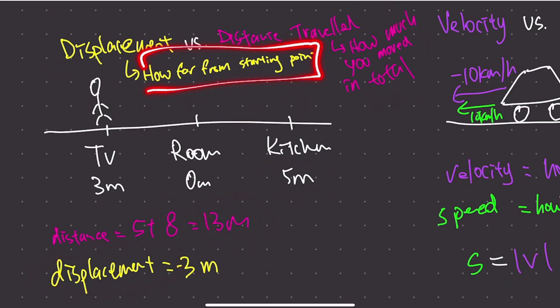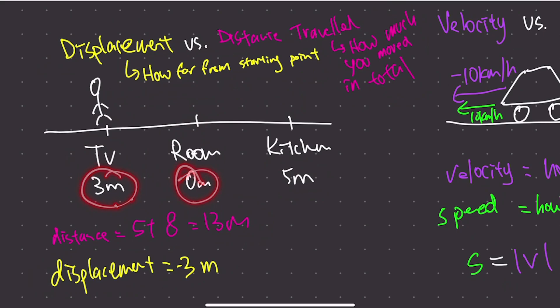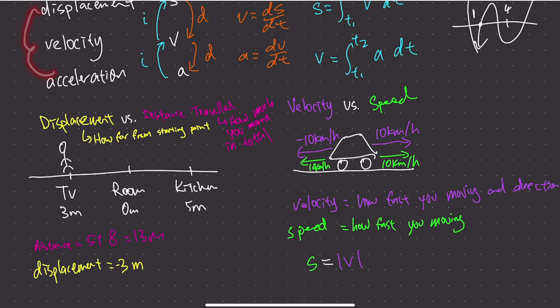Your displacement is how far the TV is from your room — three meters — but since it's on the left-hand side, it's negative three meters. Displacement, velocity, and acceleration all have a sign indicating direction. Since we defined right as positive, leftward displacement is negative. In a test, if they don't tell you which side is positive, you can define it yourself.